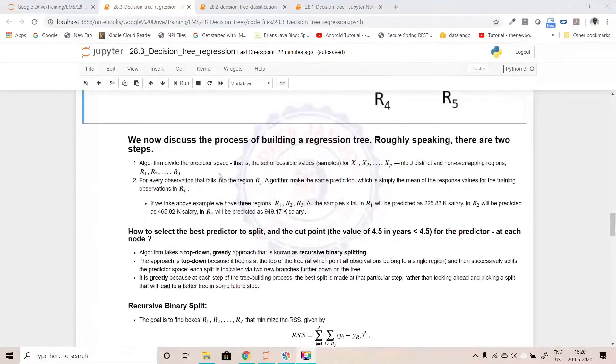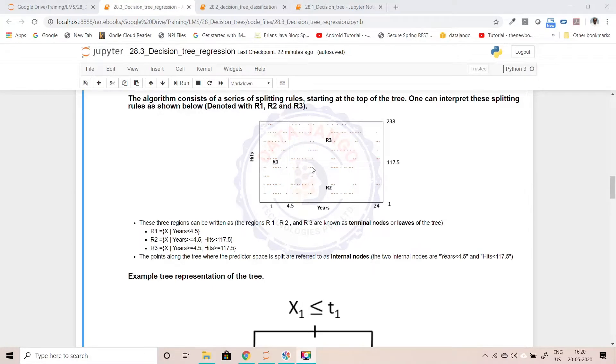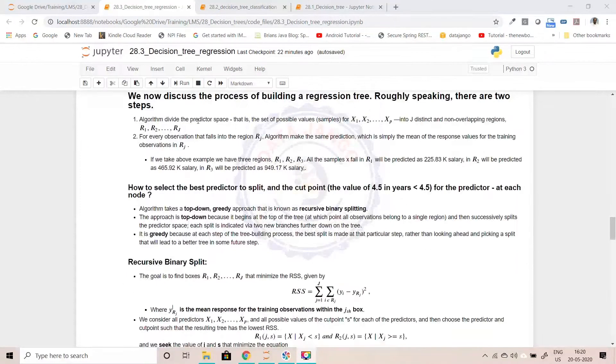So it divides the predictor space into regions, non-overlapping regions. One data point will not fall into two regions. One data point always falls into one region. That is how it actually splits.